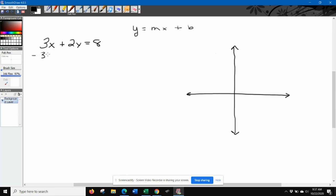So first thing I'm going to do is subtract the 3x from both sides. And if I do that, I'll have 2y and a negative 3x and a positive 8. I went ahead and put the negative 3 first just so it follows that form.